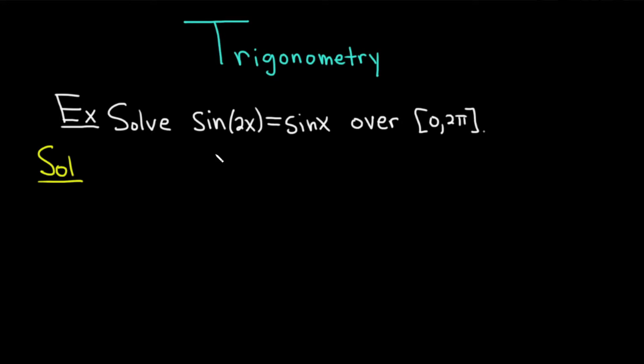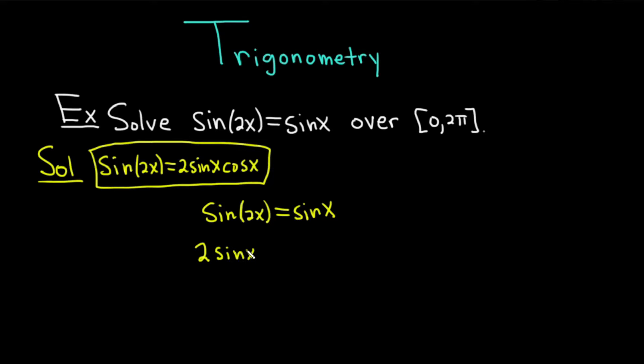The first step in this problem is to use a very important identity that comes up a lot in calculus. It's the identity that tells us that the sine of 2x is equal to 2 sine x cosine x. This identity is used a lot in calculus. It's super useful to know it. In this particular problem, we have sine 2x equals sine x. So the first step is going to be to replace sine 2x with this identity. So this is 2 sine x cosine x equal to sine x.